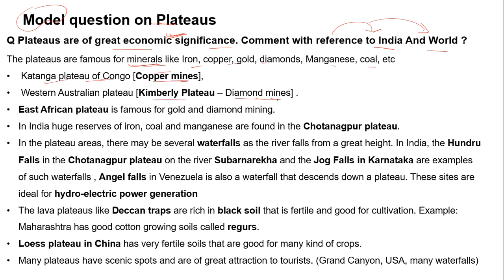For example, the Katanga Plateau of Congo is famous for copper mines. The Kimberley Plateau is famous for diamonds. The East African Plateau is known for gold and diamond mining. The Chota Nagpur Plateau is very famous for coal, iron, and manganese. The next important economic significance of plateaus is waterfalls, which can generate hydroelectricity and serve as tourist attractions. Examples include Hundru Falls in the Chota Nagpur Plateau on the Subarnarekha River, Jog Falls in Karnataka, and Angel Falls in Venezuela.